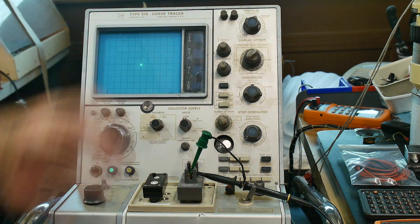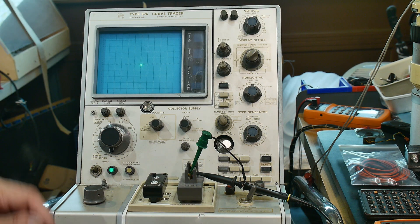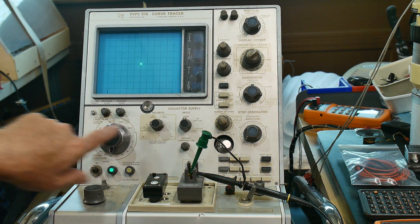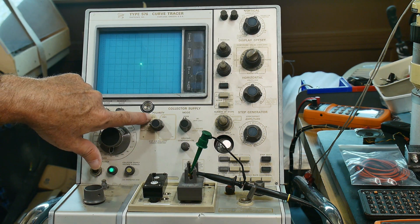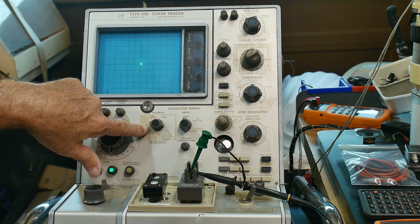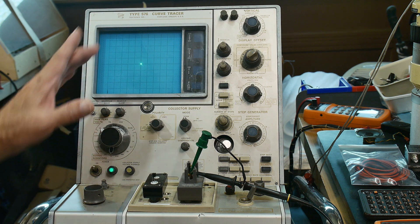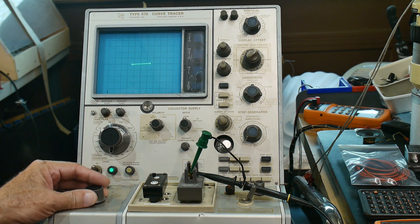There we go, there we got spot again. There's something wrong in the vertical section I believe, but we'll put a spot here. I'm going to be using AC mode instead of being NPN positive, I'm going to be using AC mode which does plus and minus voltages on the collector.